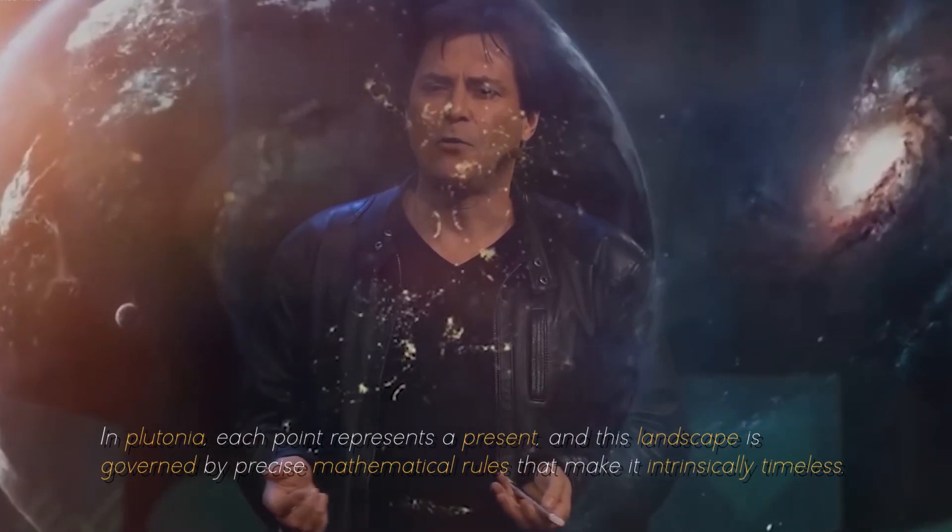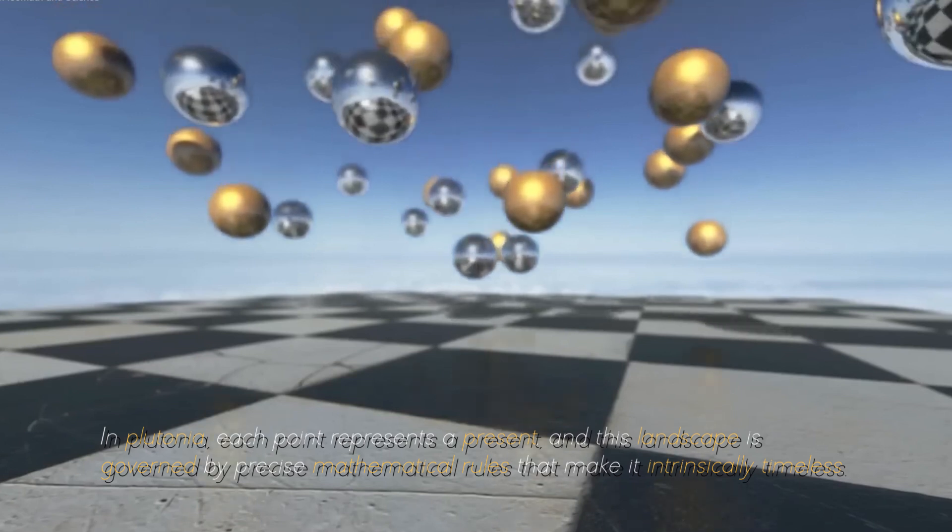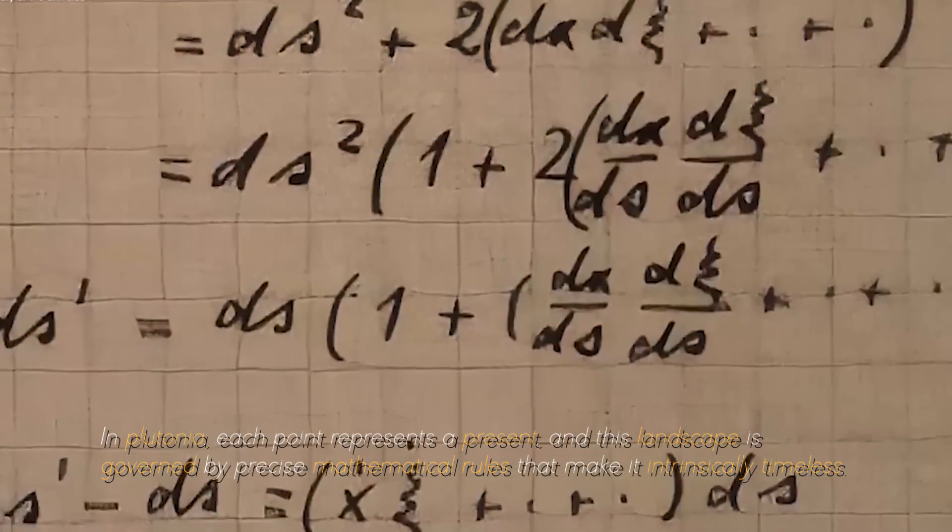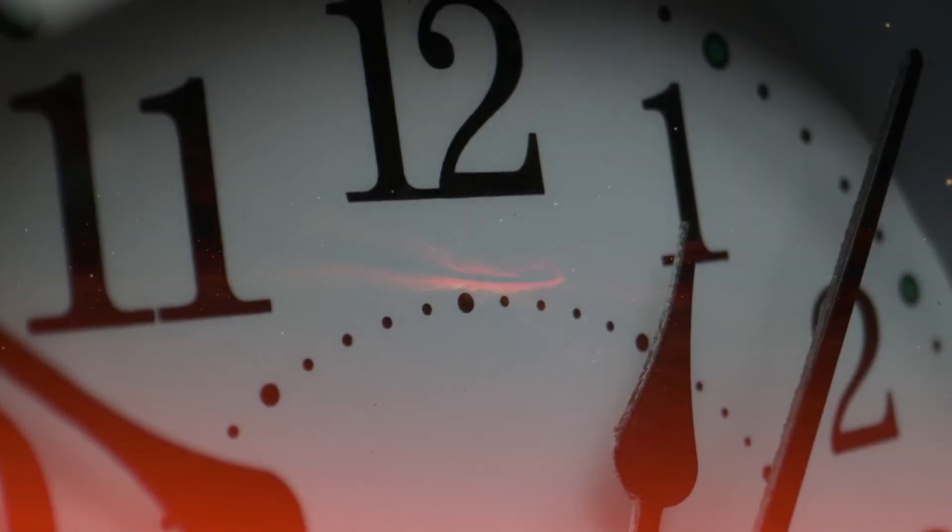In Platonia, each point represents a present, and this landscape is governed by precise mathematical rules that make it intrinsically timeless. This perspective is related to the renowned name of Albert Einstein, whose theory of space-time is fundamental to our current understanding of the universe.